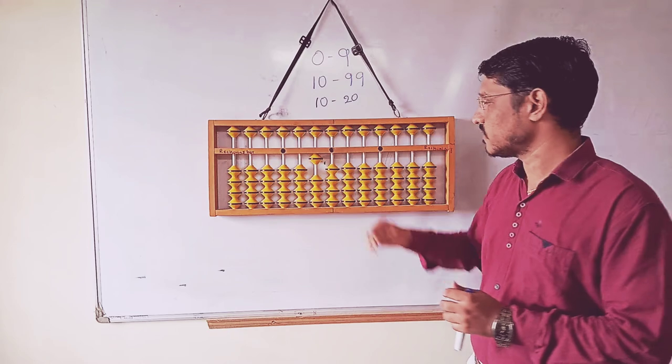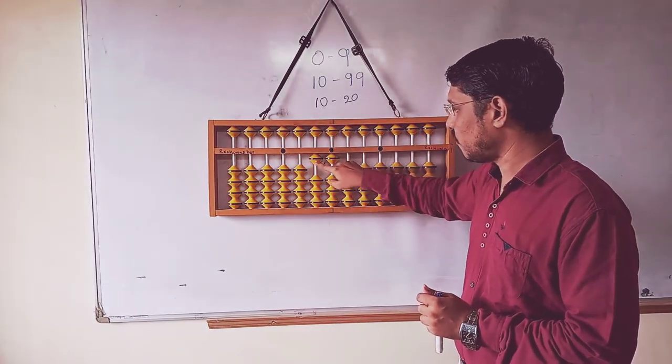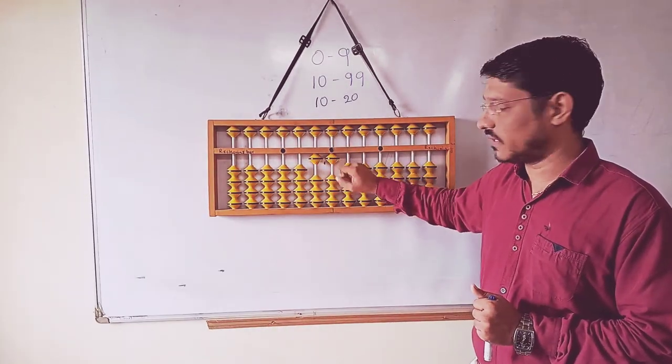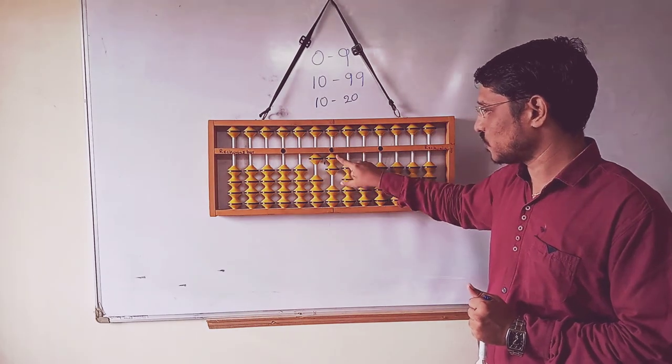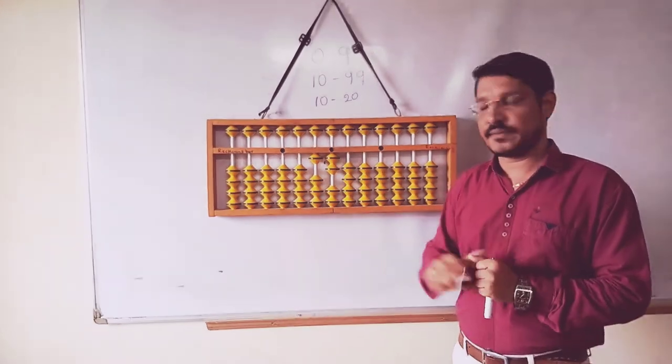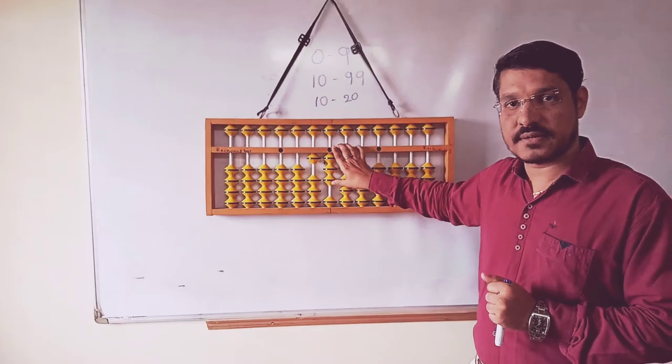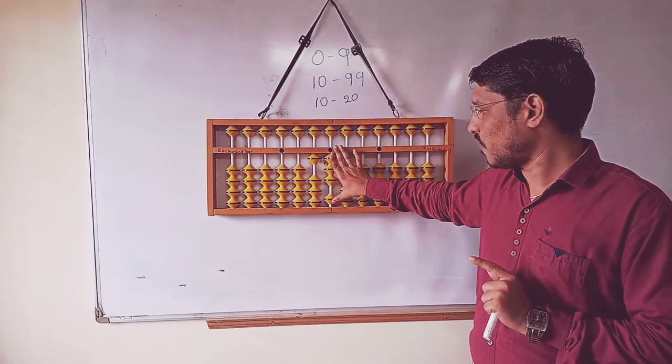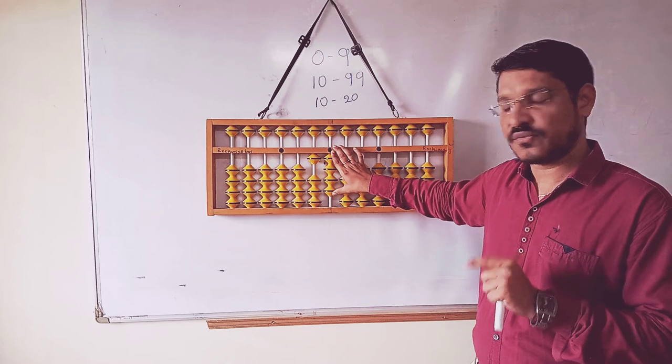Then next is 1, 1, how much? 11. 1, 2, how much? 12. 1, 3, how much? 13. 1, 4, 14.